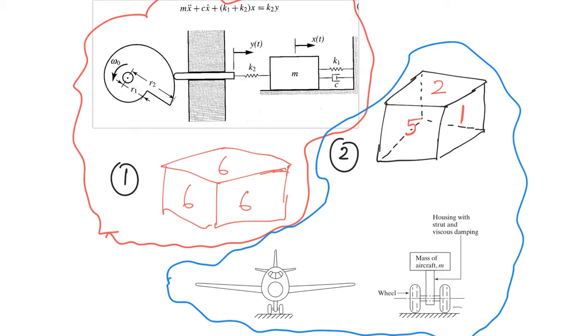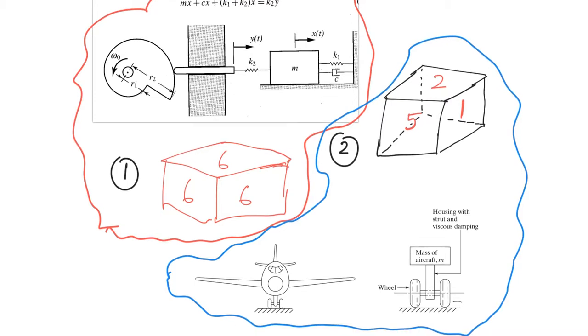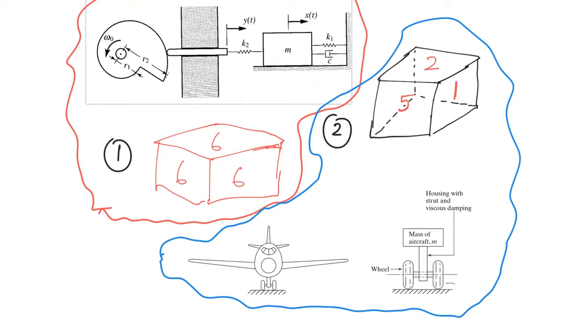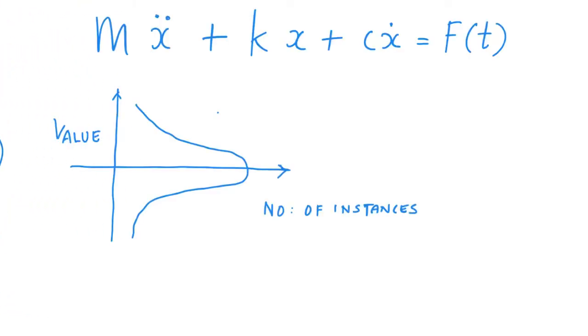Now this was the first thing I had to tell you before we go ahead and talk about stationary random processes and ergodic processes. The second thing has to do with the variance or variation in a particular value. In the example we just looked at, the excitation force was varying or it was random. We were not confident about what was the excitation force acting on the system.